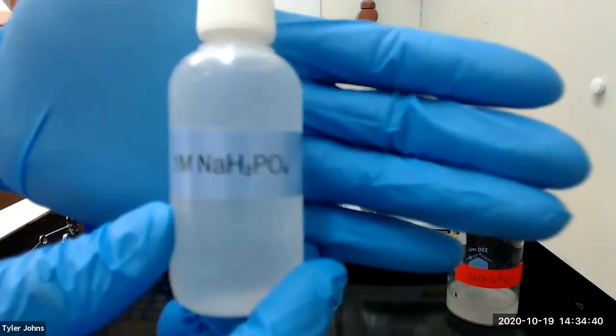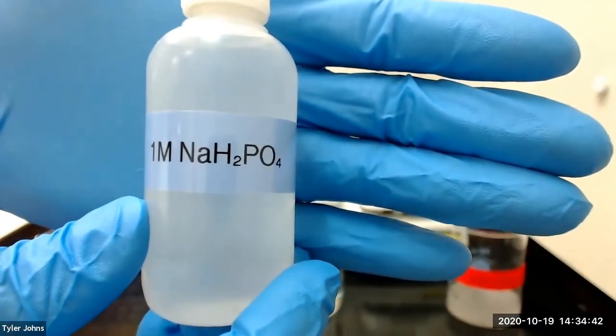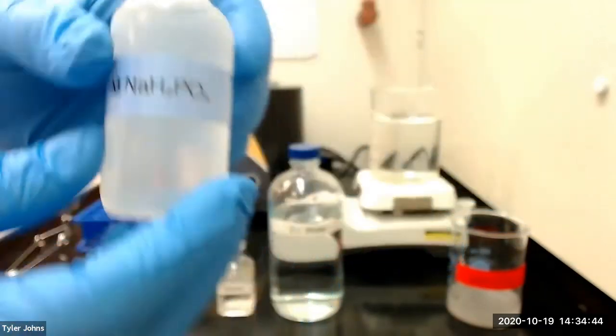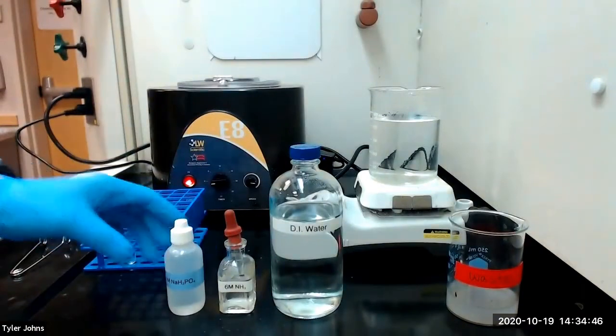Then we will add 0.5 milliliters of 1 molar sodium dihydrogen phosphate, and we will stir for 5 to 10 minutes. A white precipitate of magnesium ammonium phosphate hexahydrate is a preliminary indicator of magnesium.